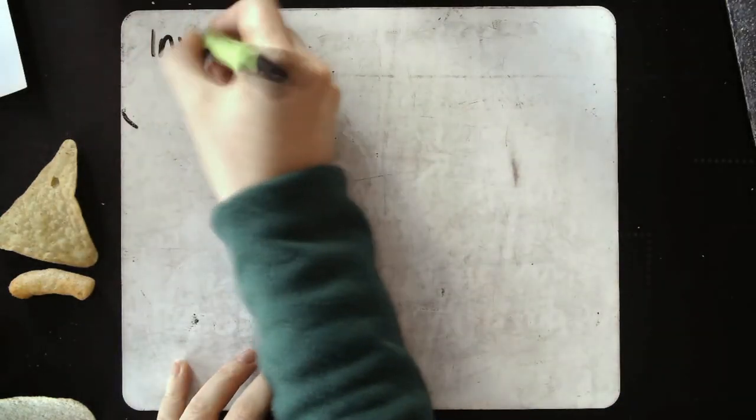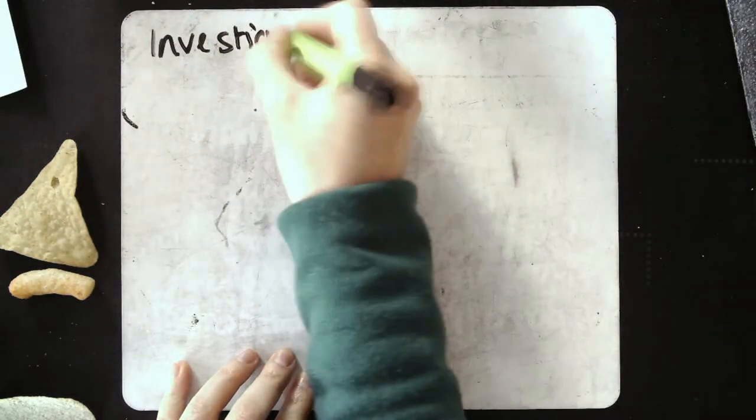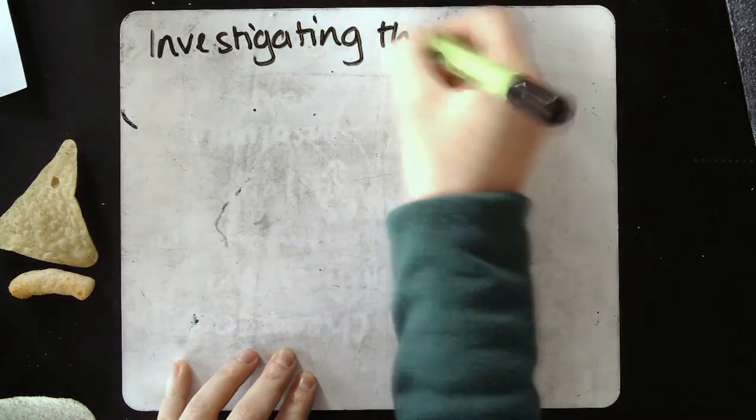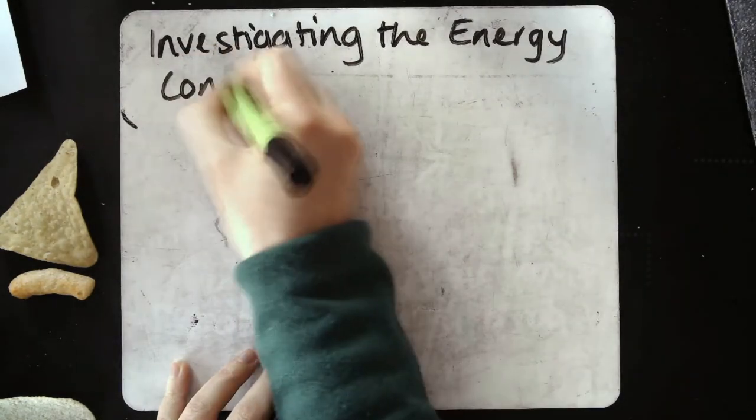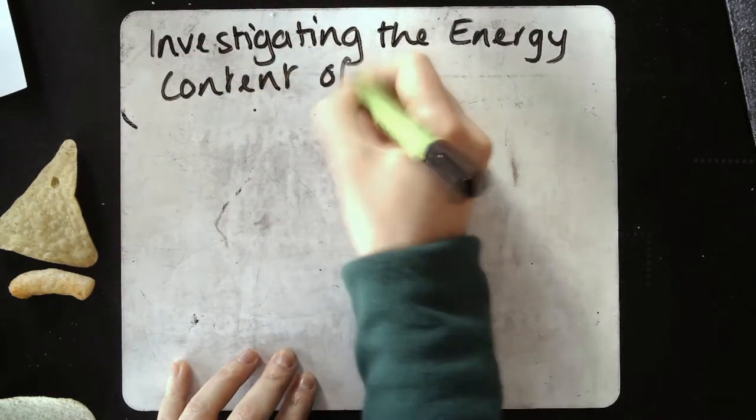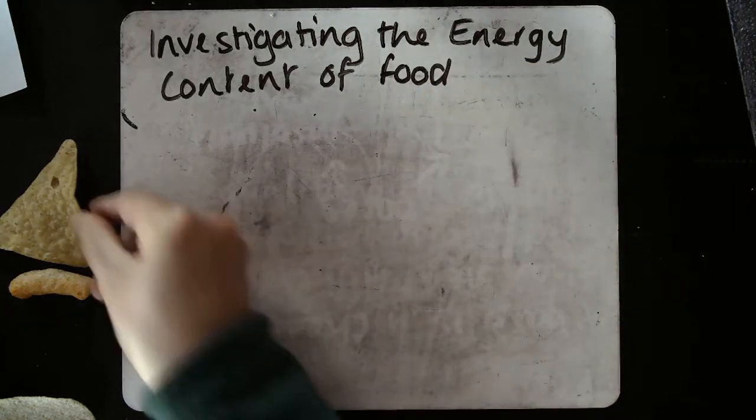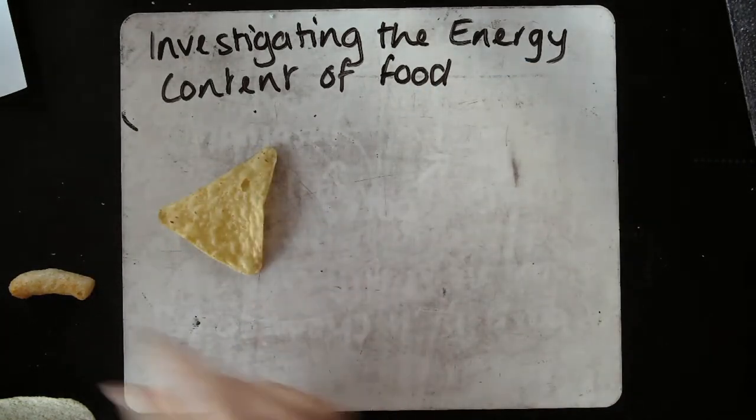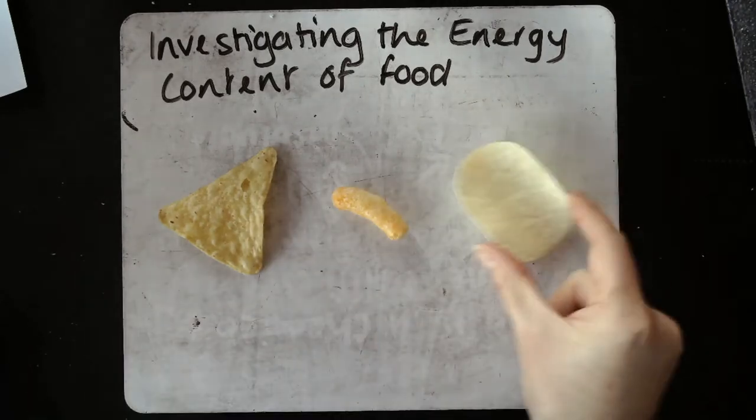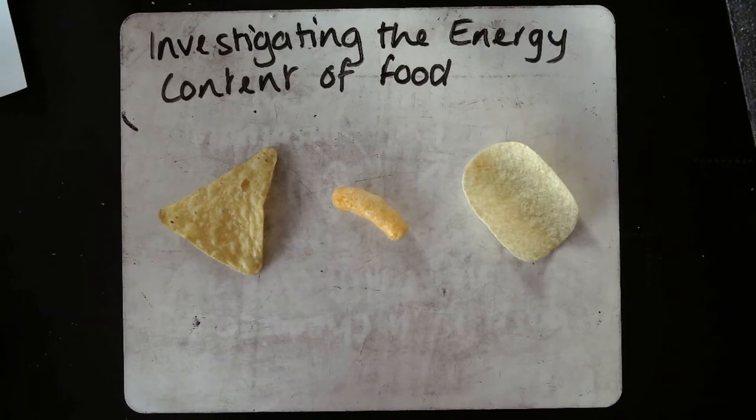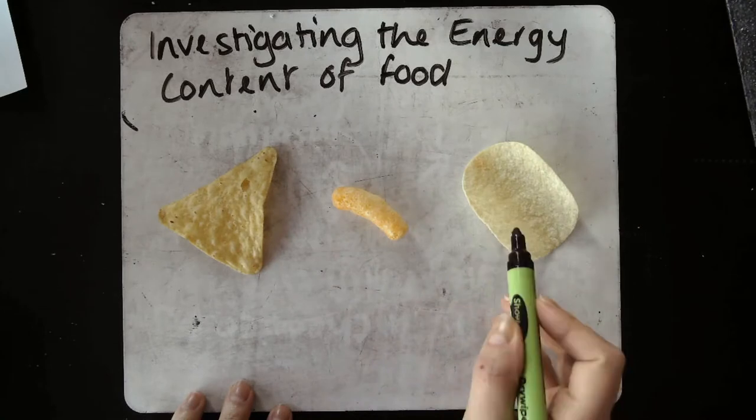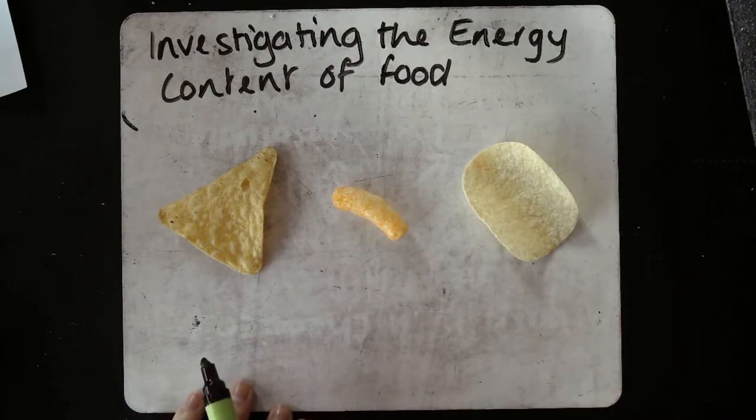In this video we are going to be investigating the energy content of food, and I'm going to be doing that using crisps. So what I want to know out of a Dorito, a cheese puff and a Pringle, which of these three crisps has the most energy? Food is a source of chemical energy, so I want to know which has the largest store of chemical energy.